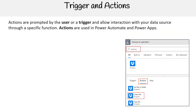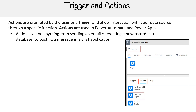Actions are prompted by the user or a trigger and allow interaction with your data source through a specific function. Actions are used in Power Automate and Power Apps. Actions can be anything from sending an email or creating a new record in a database to posting a message in a chat application.